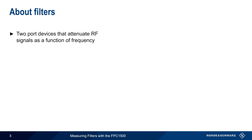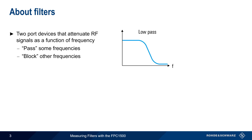Let's start with a brief review of filters. Filters are two-port devices that attenuate radio frequency signals as a function of their frequency. Another, somewhat simplified way of saying this is that filters pass some frequencies and block other frequencies. Filters are generally grouped into four categories based on the frequency ranges that they attenuate. Low pass filters pass lower frequency signals and block higher frequency signals, and high pass filters do the opposite — they pass higher frequencies and block lower frequencies.